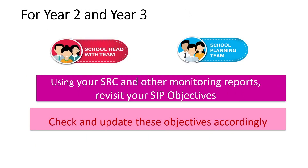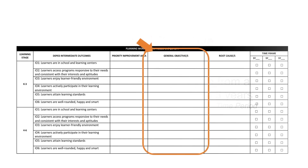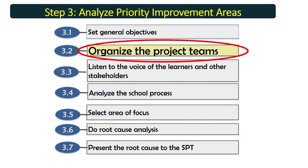Using your SRC and other monitoring reports, revisit your SIP objectives and check and update them accordingly. For example, a general objective would be: to increase the MPS in English from a range of 49.88 to 59.96 to 75 in three years. You need to have a baseline, a target, and a time period. Place your general objectives in the planning worksheet. Output check: accomplish the second column of the planning worksheet, or Annex 5.